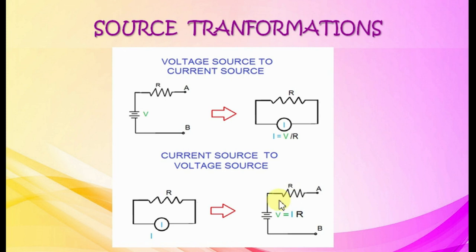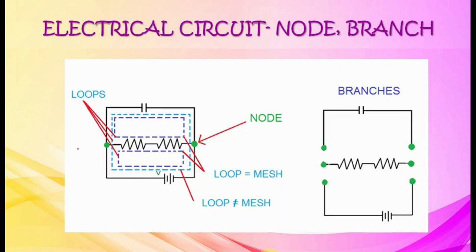Components of an electrical circuit. A node is a junction point in the circuit. When an element exists between two nodes, the path from one node to another through this element is called a branch. A loop is any closed path in a circuit. A mesh is a loop that has no other loops inside it.